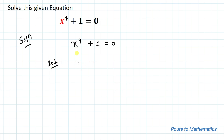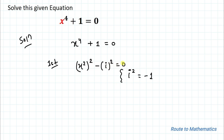We can write x to the power 4 as x squared whole square, and 1 — since we know that i squared equals to minus 1 — we can write it as minus of i squared, giving us x squared whole square minus i squared equals to 0. Now we will apply the algebraic identity a squared minus b squared, which equals a plus b multiplied with a minus b.